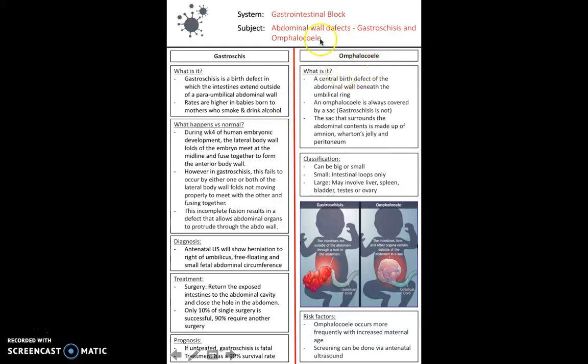Next, some congenital abdominal wall defects. First is gastroschisis — a birth defect in which the intestines extend outside of the paraumbilical abdominal wall. Rates are higher in babies born to mothers who smoke or drink alcohol during pregnancy. During week four of normal development, the lateral body wall folds of the embryo meet at the midline and fuse to form the anterior body wall. In gastroschisis, one or both walls fail to meet and fuse properly, resulting in a defect that allows abdominal organs to protrude through the abdominal wall.